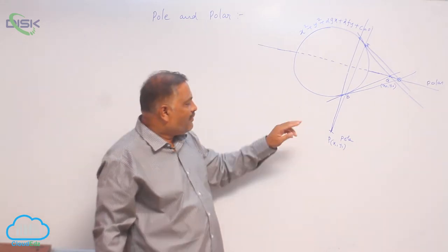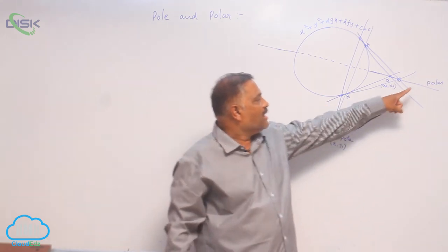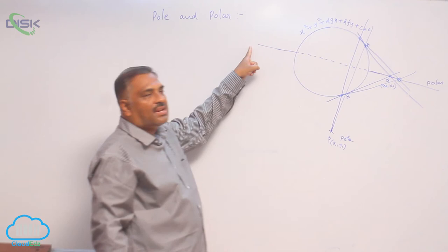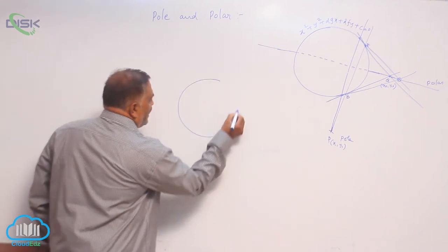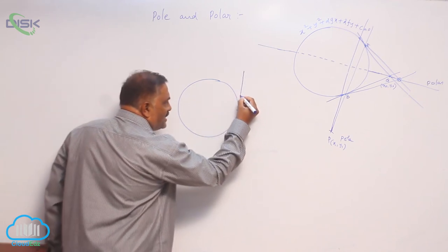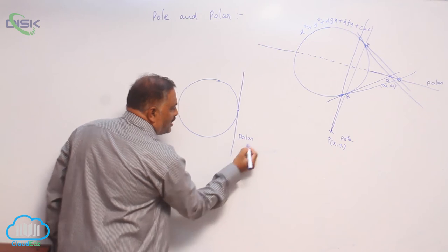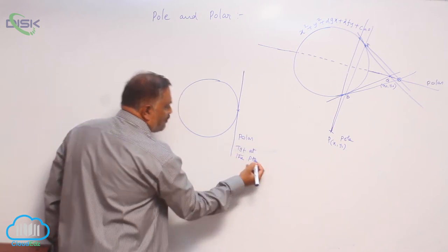When the point lies outside the circle, the polar is intersecting the circle in two points. When you take a point on the circle, the polar will become tangent at that point.